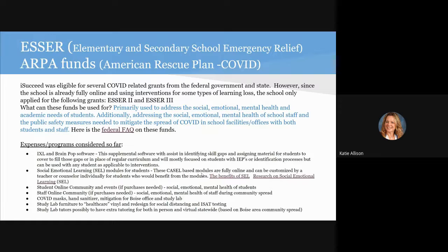Much of that COVID grant money initially is used for safety in the school. We're an online school so we don't have a lot of those safety needs that traditional schools have, but we do have a Boise office that students and parents come into for orientations. When community spread is not great, we have regional orientations that we do. We ensure we've got masks, hand sanitizer, and things we can do for mitigation. We do testing in our Boise office, and we've been using that money to ensure we've got distancing, clear plexiglass dividers, and air purifiers in the study lab.